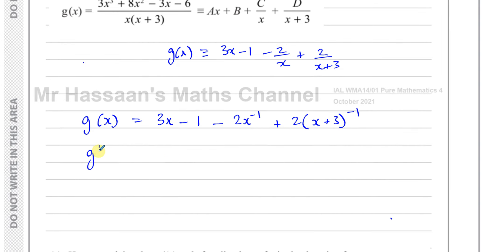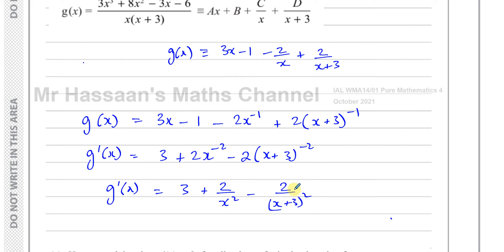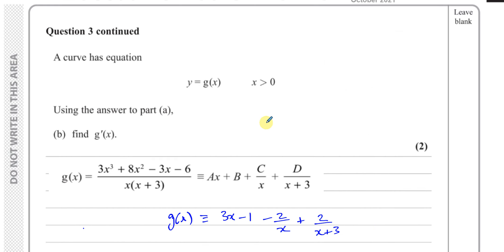Differentiating, the three x gives three, the constant negative one becomes zero, negative two times x to the minus one gives plus two x to the power of minus two, and two times x plus three to the minus one gives minus two times x plus three to the power of minus two, multiplied by the inner derivative which is one. So g dash of x equals three plus two over x squared minus two over x plus three squared.